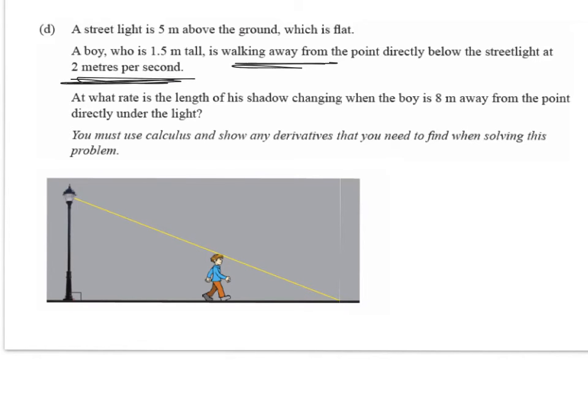So we're going to underline that. That's a rate of change there that's going to help us. At what rate is the length of his shadow changing when the boy is 8 metres away from the point directly under the light?